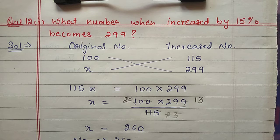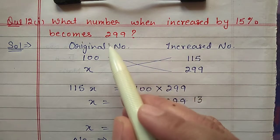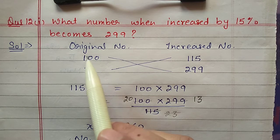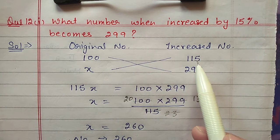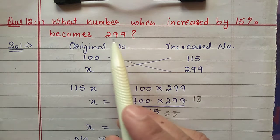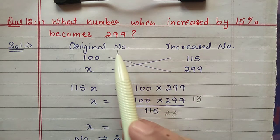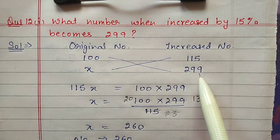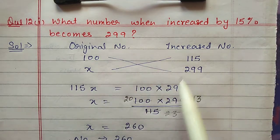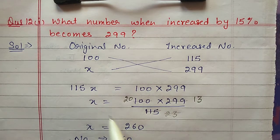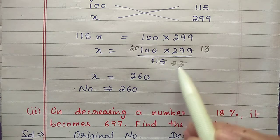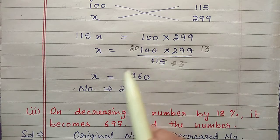Question number 12: what number when increased by 15 percent becomes 299? Here we have to find the original number, and the increased number is given. Suppose original number is 100, so after increasing 15 percent it becomes 115. Now the original number is x and after increment it becomes 299. Place values correctly: 299 is the increased number. Cross multiply — x and 115 come one side, 100 and 299 the other. Shift 115 to the other side, cancel with 5 table — answer is 260. So original number is 260.